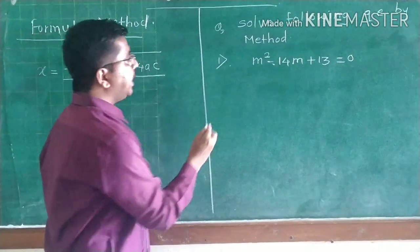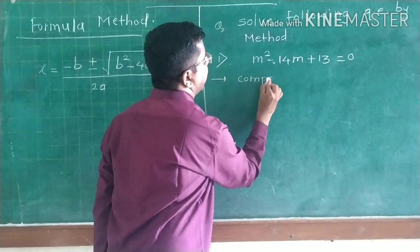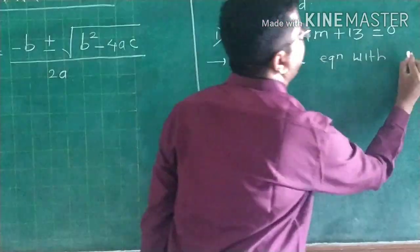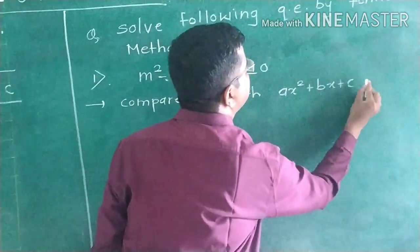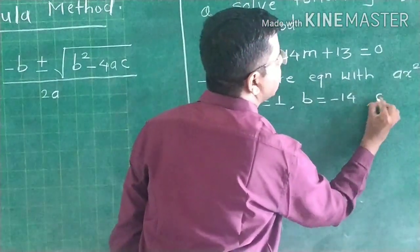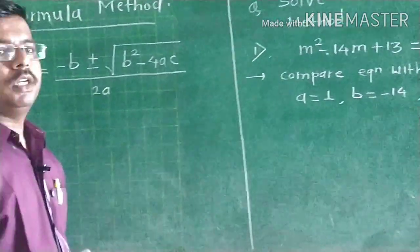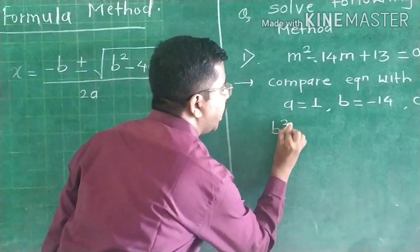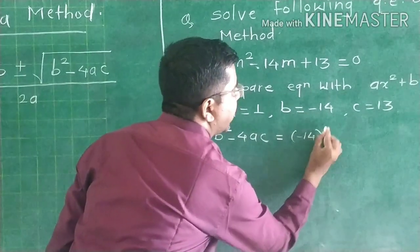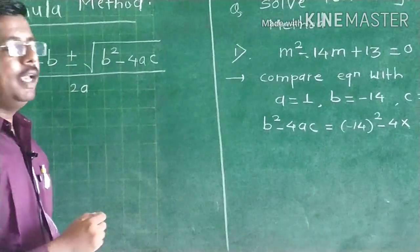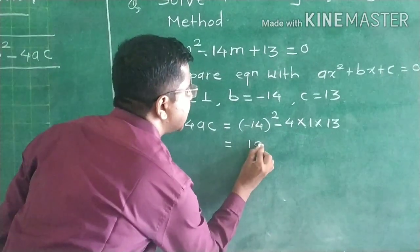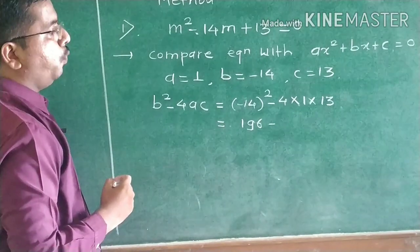First, compare this equation with the standard form ax squared plus bx plus c equals 0. We get a equals 1, b equals minus 14, and c equals 13. Now we find the value of b squared minus 4ac: that is minus 14 squared minus 4 times 1 times 13, which equals 196 minus 52.